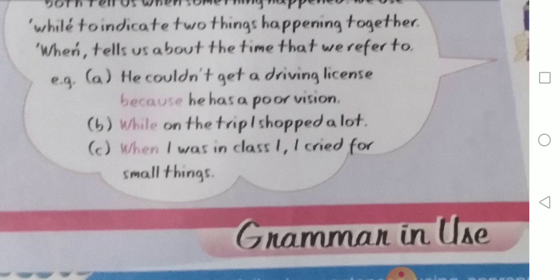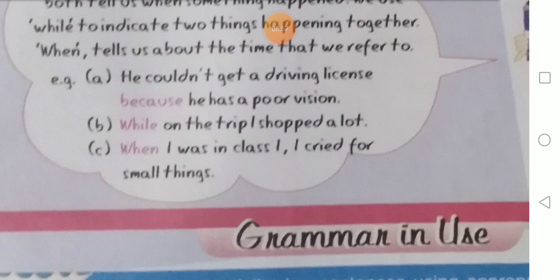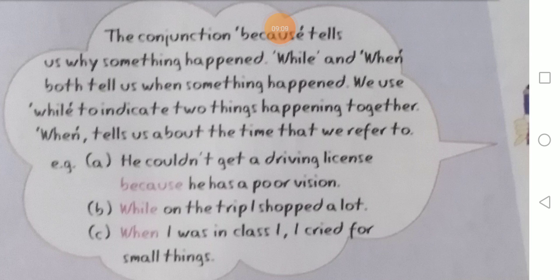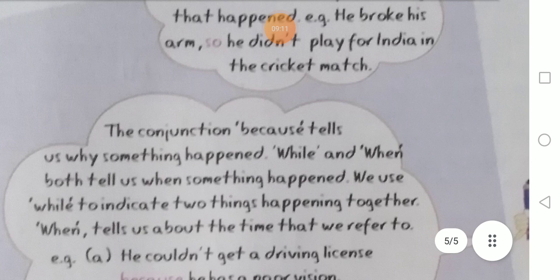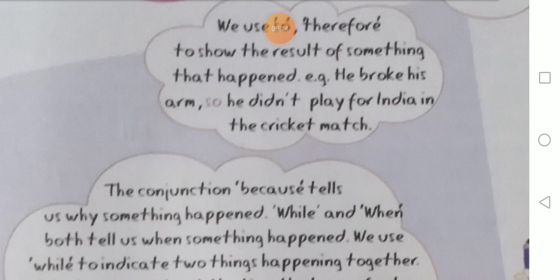So all these — because, while, when, so, therefore, either/or, neither/nor — all these are conjunctions, connectors, adhesives. यह सब connectors और conjunctions हैं जो दो words को, दो sentences को, दो phrases को, दो नामों को जोड़ने का काम करते हैं। We use these conjunctions in our languages.